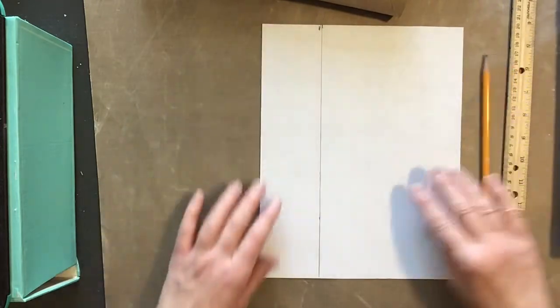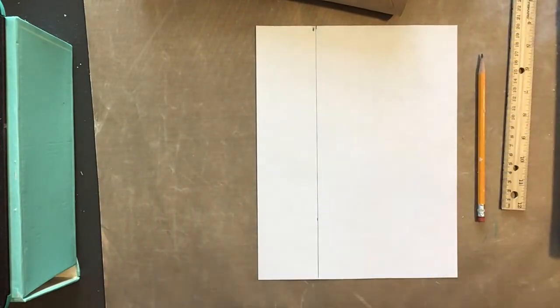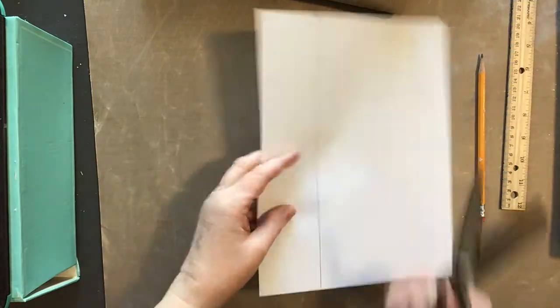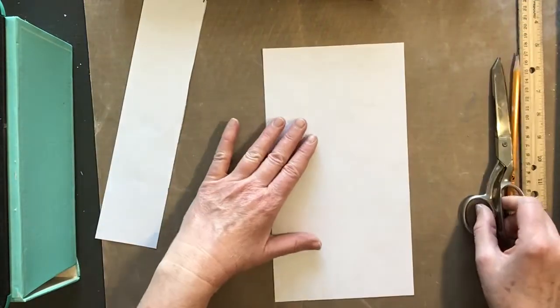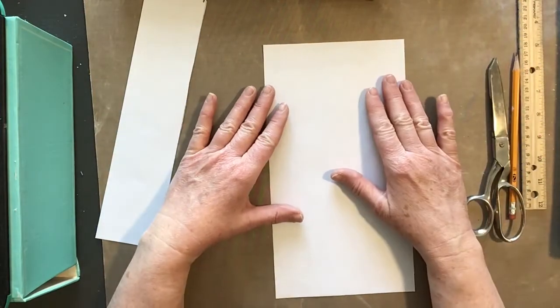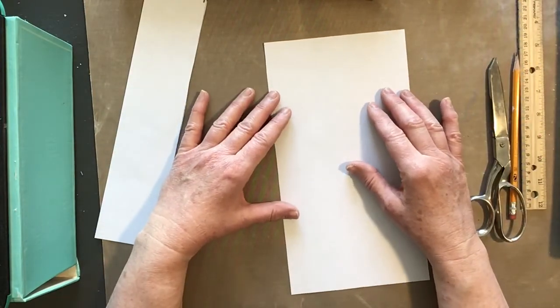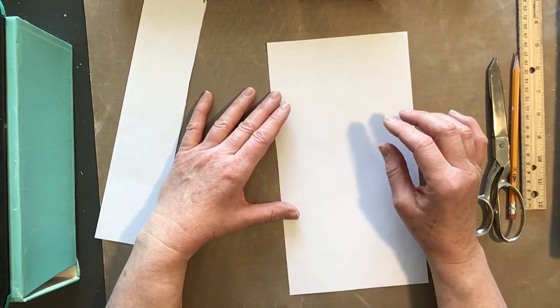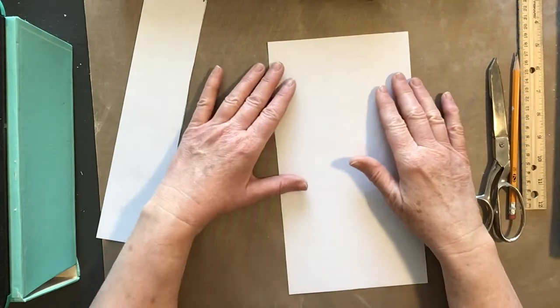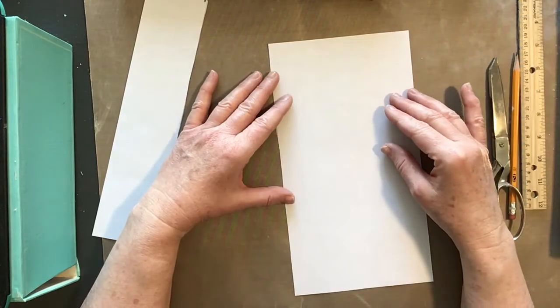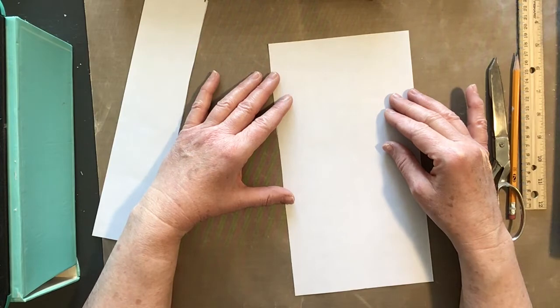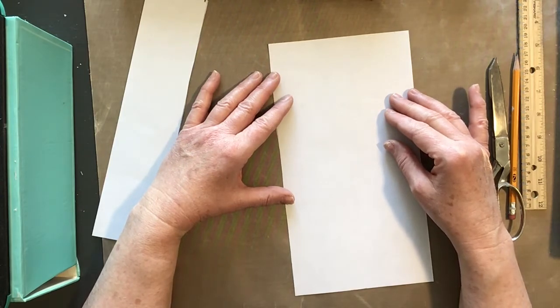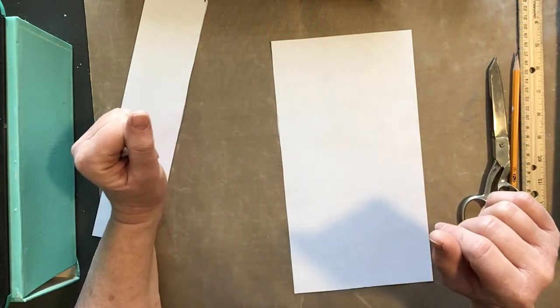Then you can cut right on that line. Now you can decorate this piece of paper however you want, but make sure that it's creative, that it's original, that it has line, shape, color, and it's interesting to look at. Remember, this is an art class. Don't scribble. Color neatly. You can use markers or paint, however you want to decorate it.